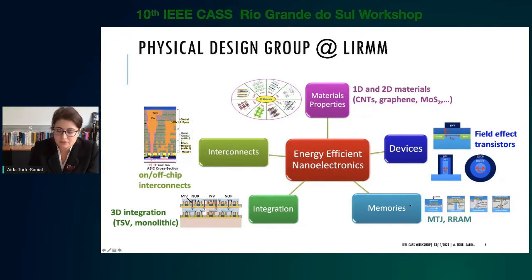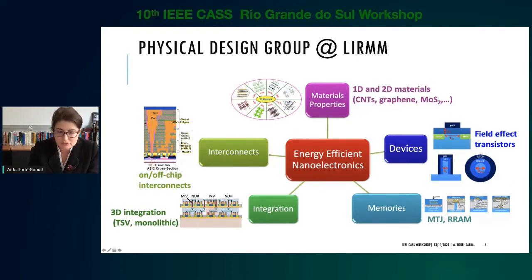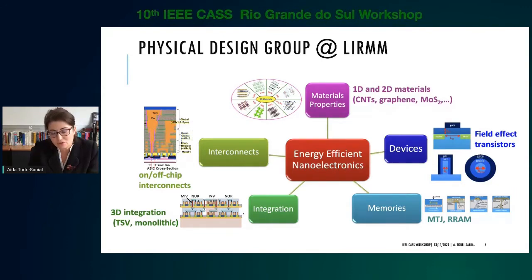We are also covering memories based on these new materials and how energy-efficient they are for neuromorphic-based systems. Regarding 3D integration, as was covered in the previous presentation, we are looking into the physical design tradeoff between power consumption and performance as we leverage 3D or monolithic integration, and also the design style — how power delivery and clock delivery are performed given the many constraints from 3D integration. In this talk, I am mainly covering devices and interconnects based on carbon nanotubes.